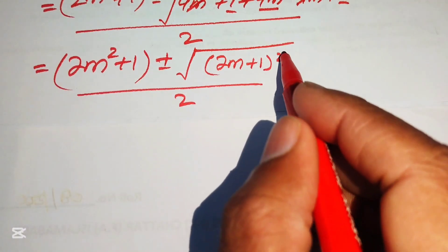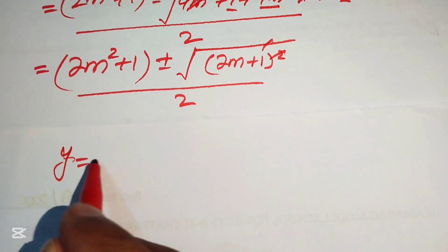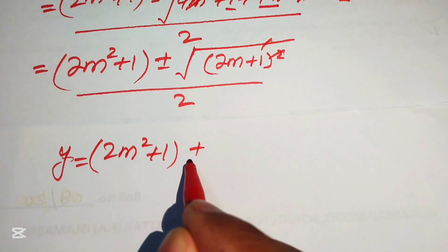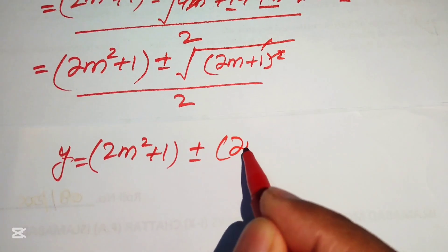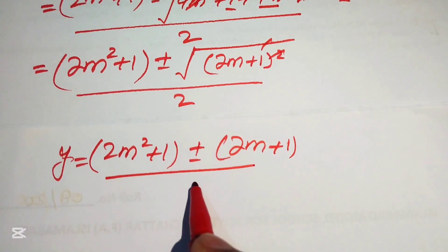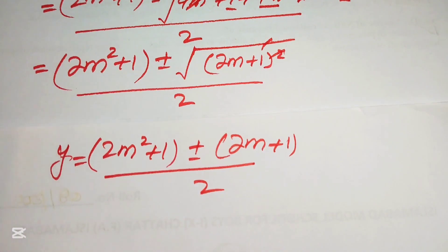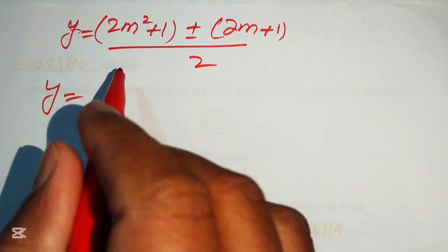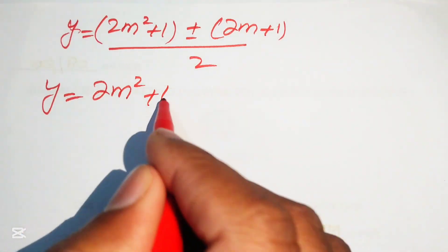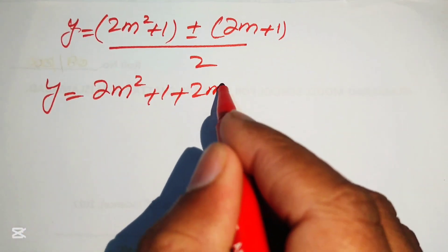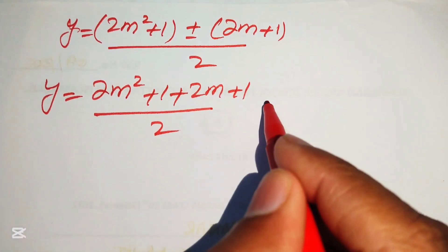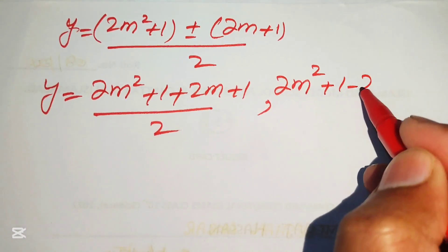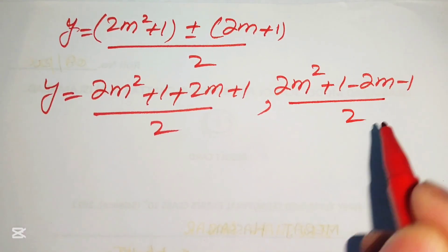The 2s cancel, and we split into two cases. Case 1 (positive): (2m² + 1 + 2m + 1) / 2. Case 2 (negative): (2m² + 1 - 2m - 1) / 2.